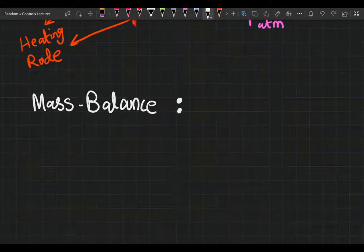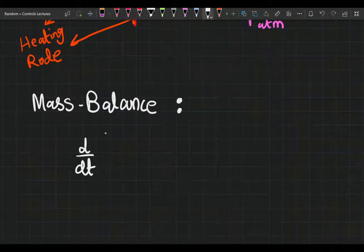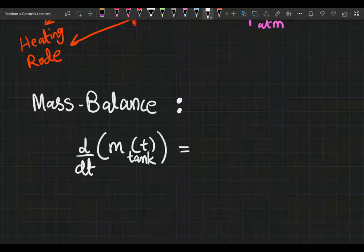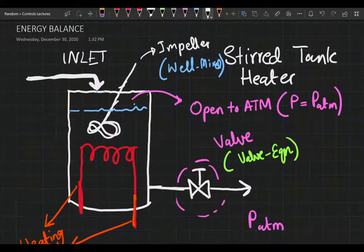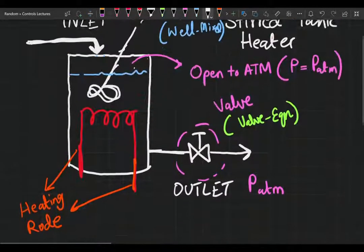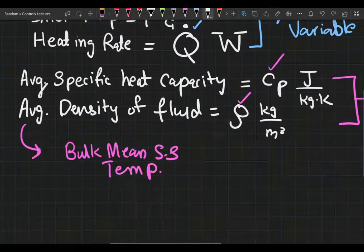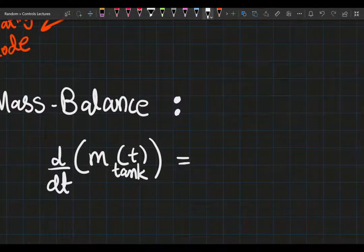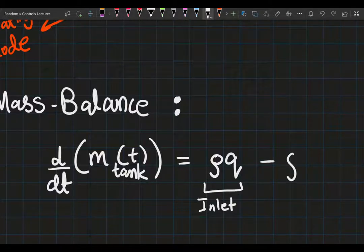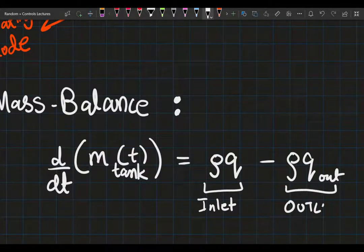The accumulation term, the change with respect to time in the mass that is present in the tank, shall equal an inlet term minus the outlet term. So we only have one inlet and one outlet. We know the volumetric flow rates and we know the density. Density times volumetric flow rate is gonna give us our mass flow rate: inlet stream minus ρQ_out.